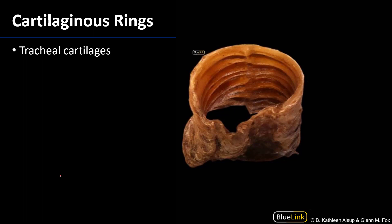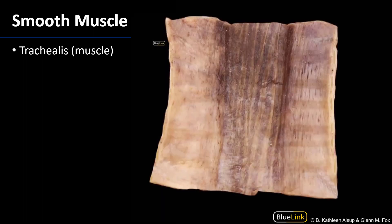If we take two transverse sections and remove a piece, we're left with what we're seeing here. This is a posterior view, and we can see the hyaline cartilage rings — those C-shapes — as they extend. That hyaline cartilage helps to maintain the patency of the airway; those are the tracheal cartilages. The posterior aspect of the trachea is a fibromuscular membrane, visible here after the tracheal cartilages have been incised and reflected out laterally. We can also see various ridges arising from the mucosa of the trachea.